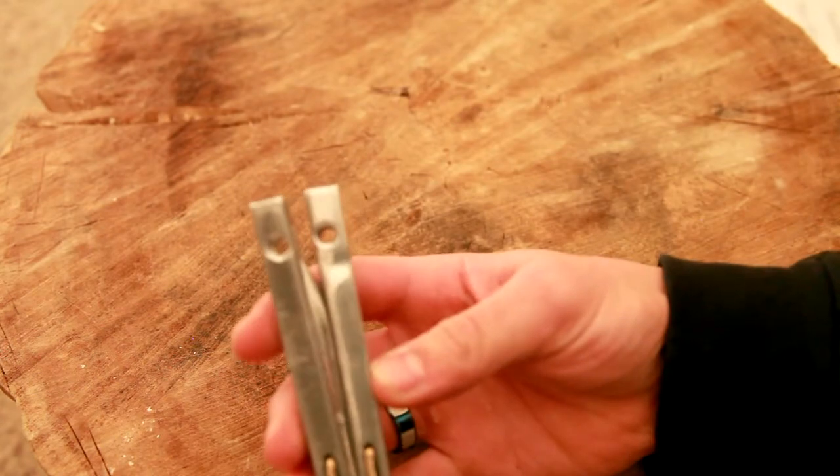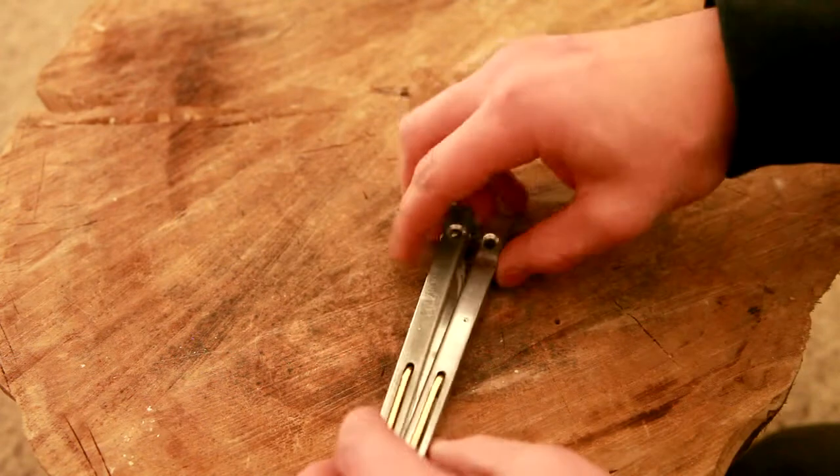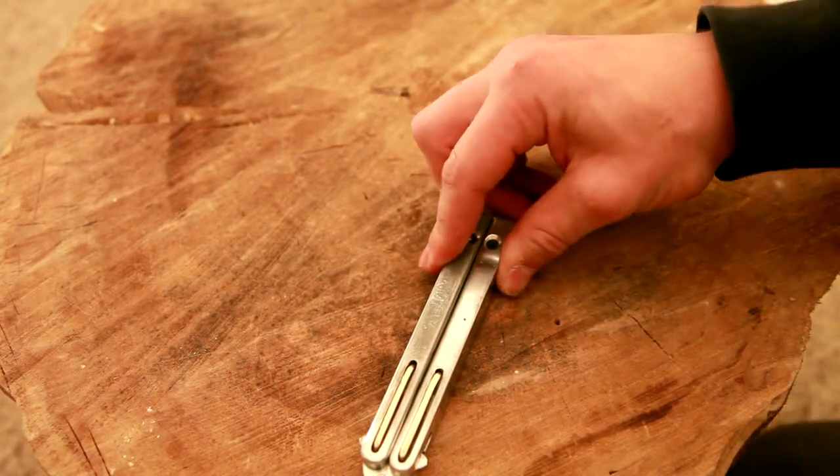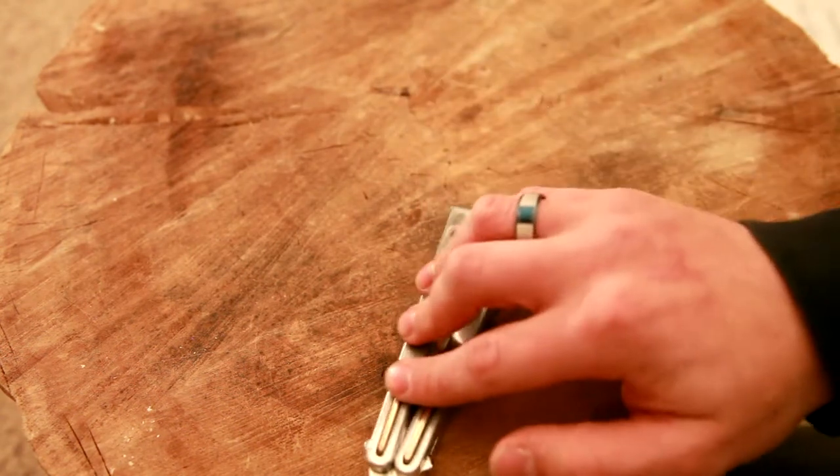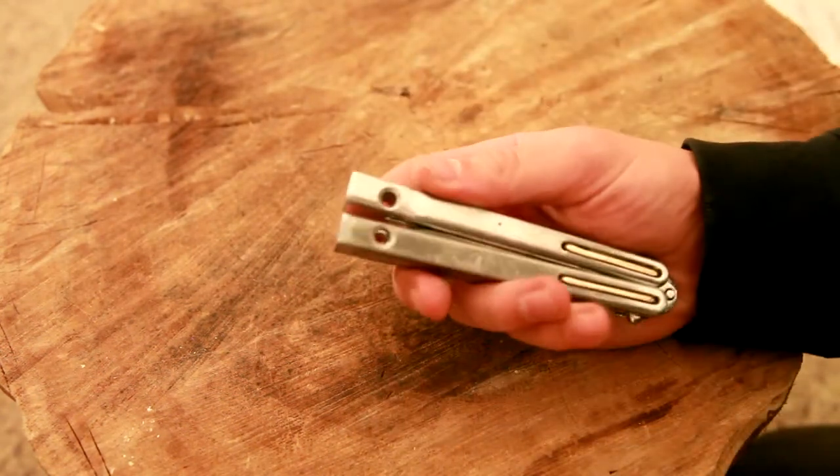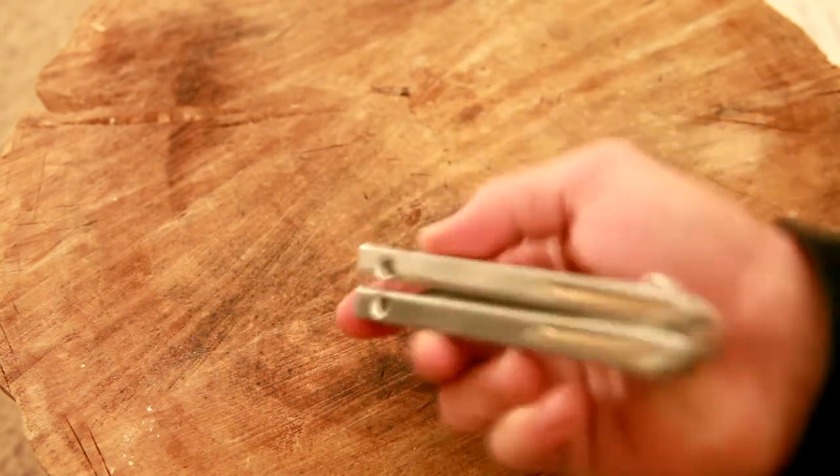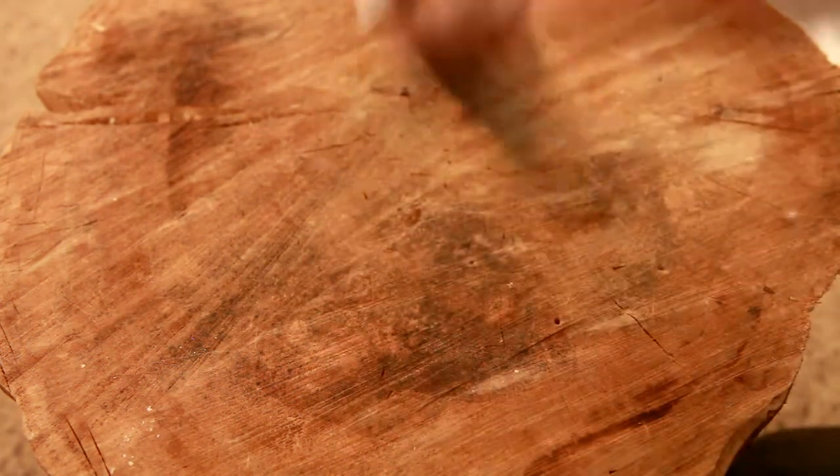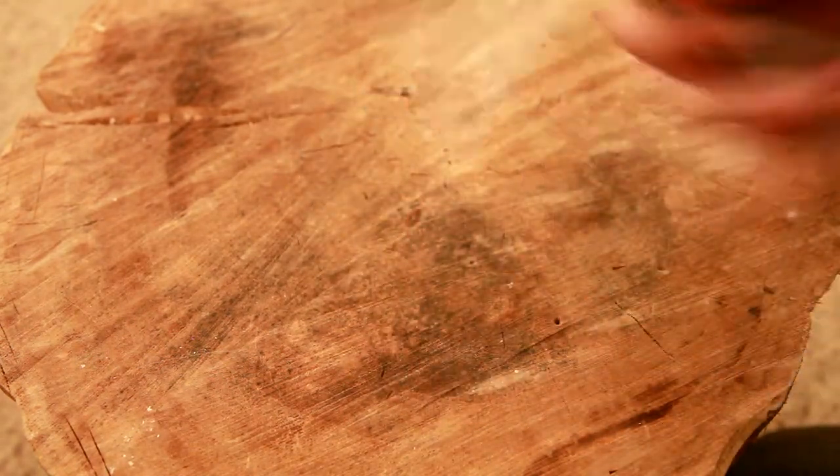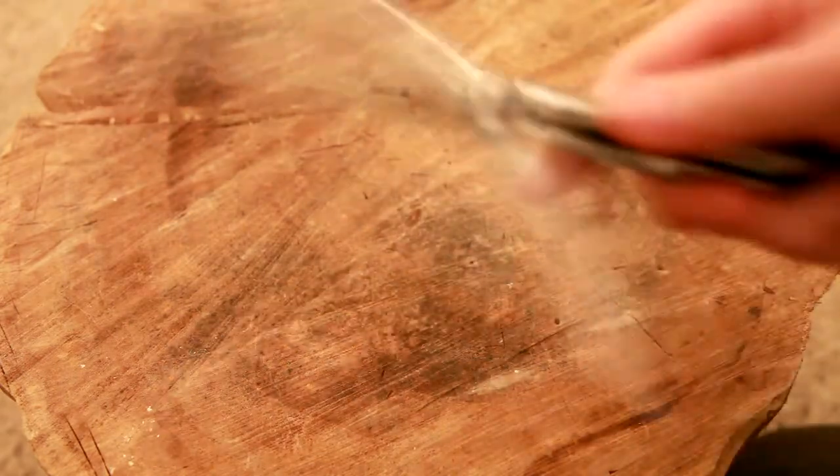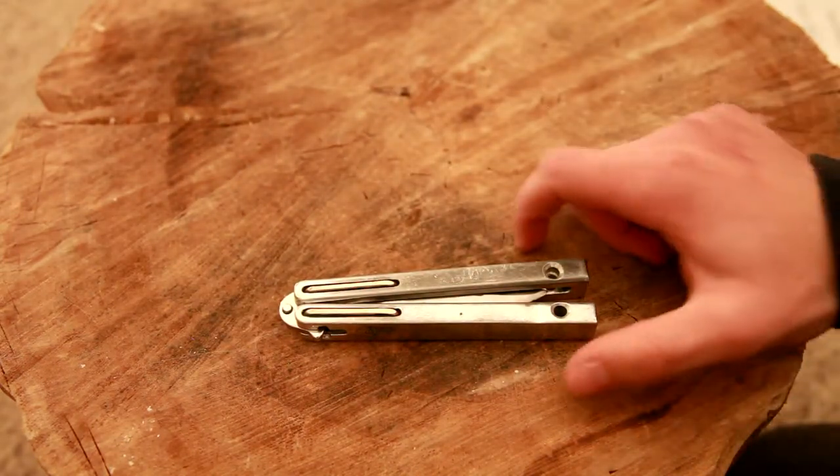The holes on the bottom originally were the same size as the holes used there and there, which were used just to clip it down to the vise so that the handles don't move when we're machining them. But I saw the Spyderfly and that's where I got the idea for these holes. And I also countersunk them so that you can do a latch drop. Since I didn't make it with a latch, it's more for flipping.